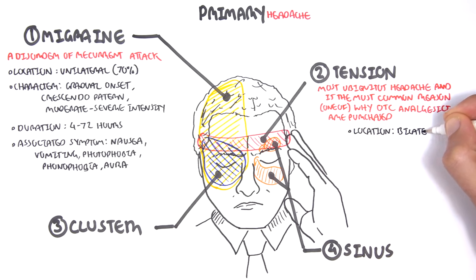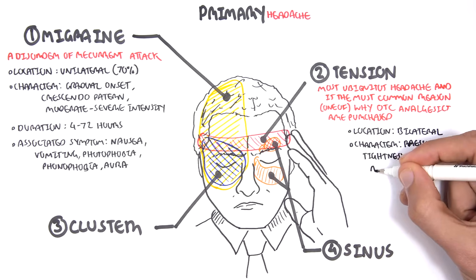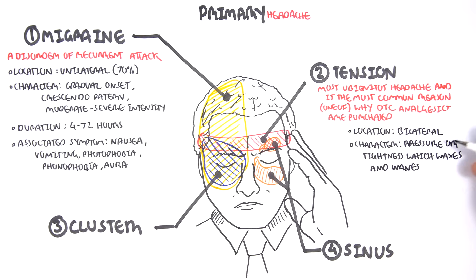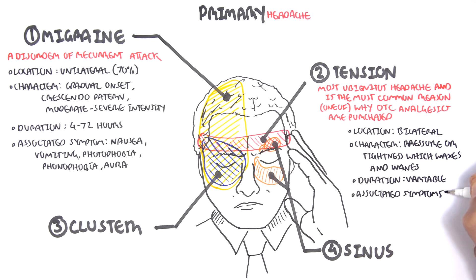The location of tension headaches are usually bilateral and around the forehead area. The characteristic: it's pressure or tightness like a band which waxes and wanes. The duration is variable and associated symptoms: usually none.